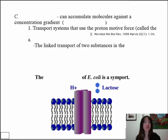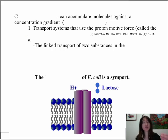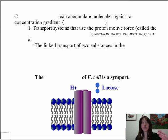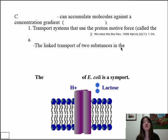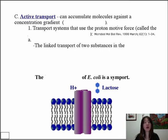Now let's turn our attention from passive transport to active transport. Active transport is the type that does require energy, because it concentrates something against its gradient — despite the concentration being low outside and high inside, the cell pumps in energy to still bring in a molecule it wants. Active transport requires energy input, which may take a couple of different forms.